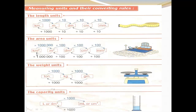The area units use squares: kilometer square, meter square, decimeter square, centimeter square, millimeter square. From kilometer square to meter square, multiply by one million. From meter square to decimeter square, multiply by 100. From decimeter square to centimeter square, multiply by 100. From centimeter square to millimeter square, multiply by 100. To go from smallest unit to greatest unit, divide by the same factor.